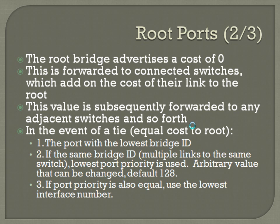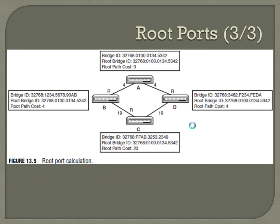Looking at this diagram — the same one we looked at before — switch A is the root bridge. The bridge IDs show that the priority on every switch is still set to the default of 32768, so we use the MAC address to determine the root. Switch A has the lowest MAC address, starting with 0100, so it becomes the root bridge. Since its cost to get to itself is zero, it advertises that cost of zero out via BPDU to both switch B and switch D.